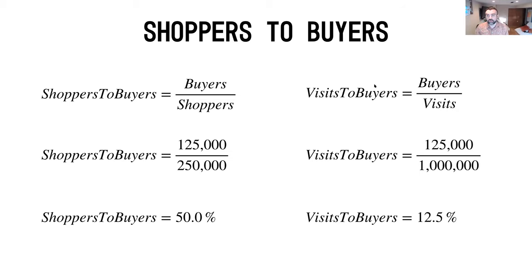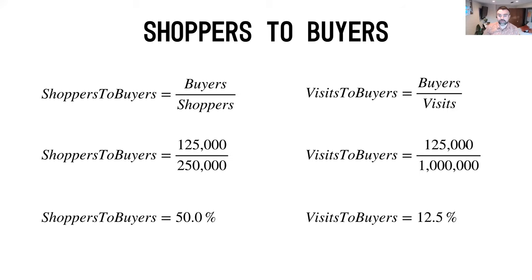On the right-hand side of the equation, we've got a running total looking at the top of the funnel all the way down to the buyer stage. From a buyer-to-visitor percentage, we look at buyers over visits. The same 125,000 buyers taken over 1 million visitors yields a 12.5% visits-to-buyers conversion rate, or in this case, visits to add-to-cart.